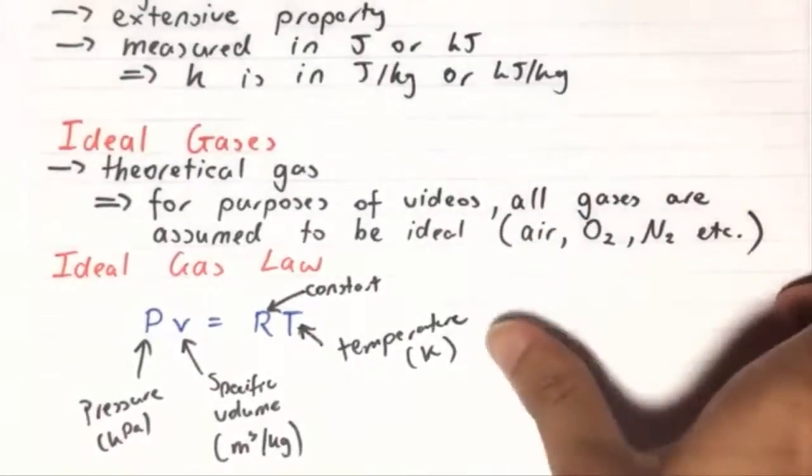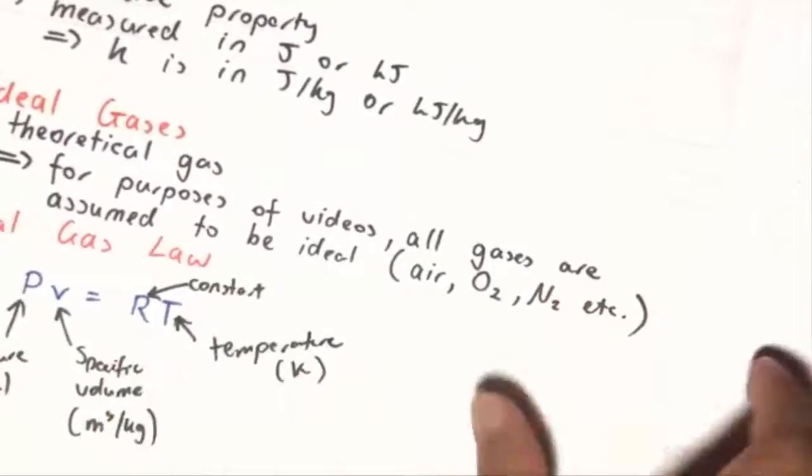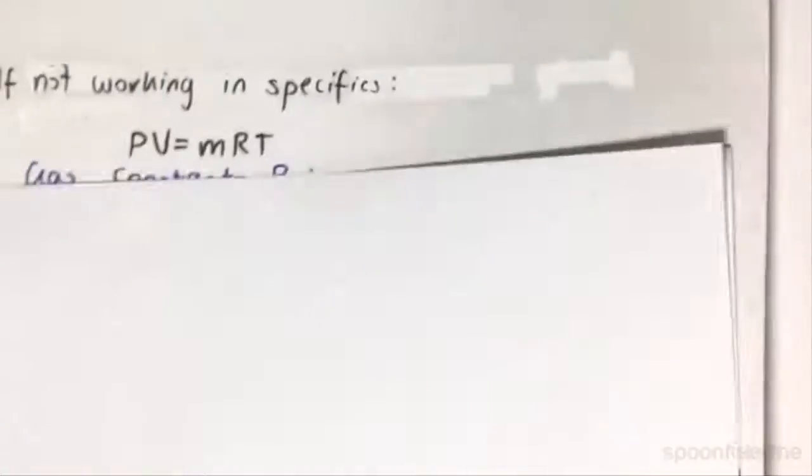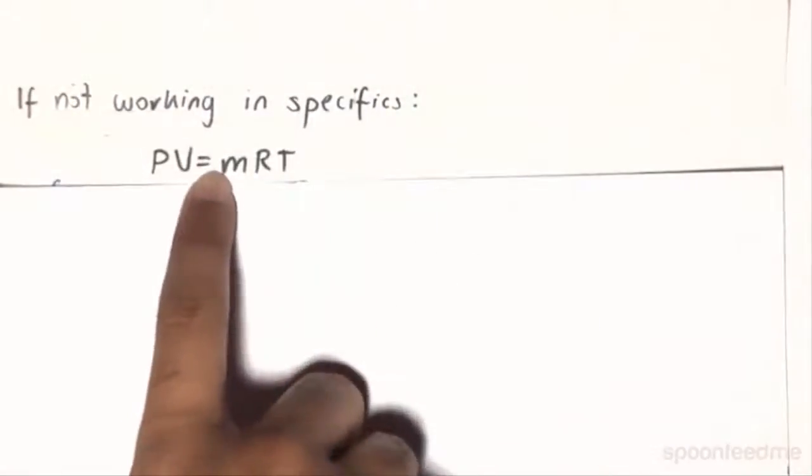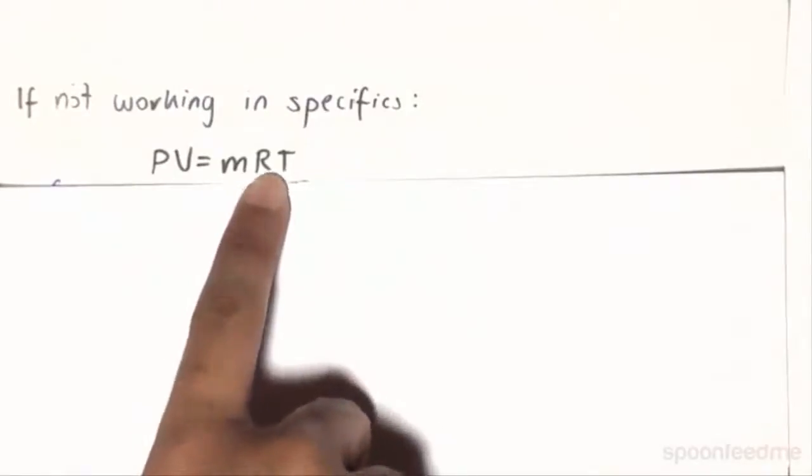So naturally, if we aren't working with our specific volume, then the equation will be PV with a capital V is equal to M, the mass, times by RT.